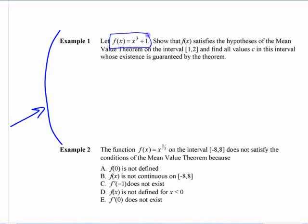If you have some kind of a function here, show that it satisfies the hypothesis of the mean value theorem. That's just saying show that it meets the criteria that we laid out in that, for this interval. And then find values whose existence are guaranteed by the theorem.